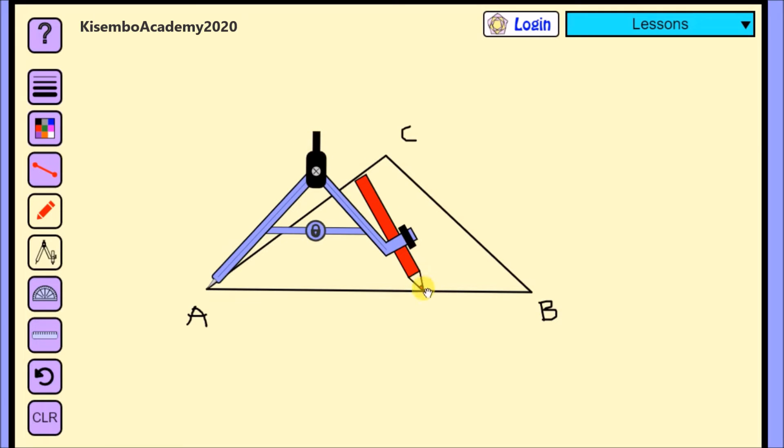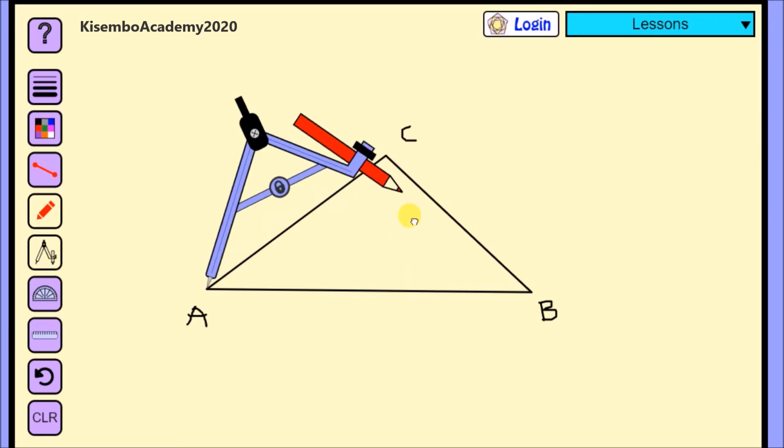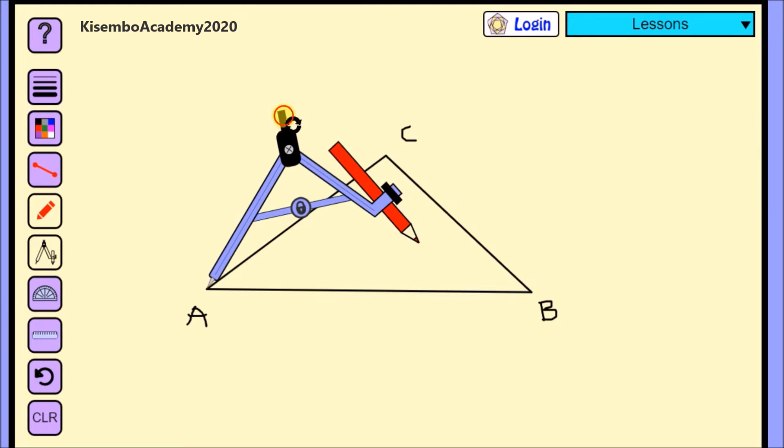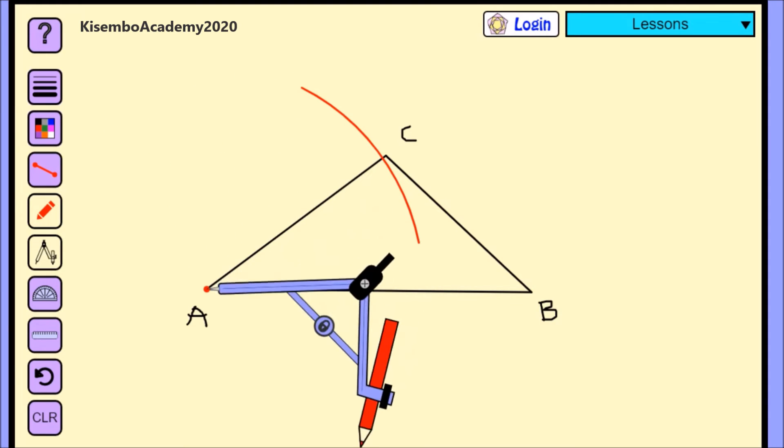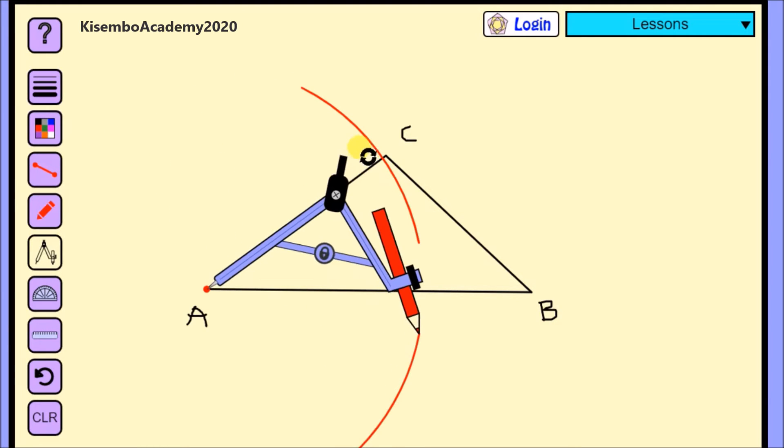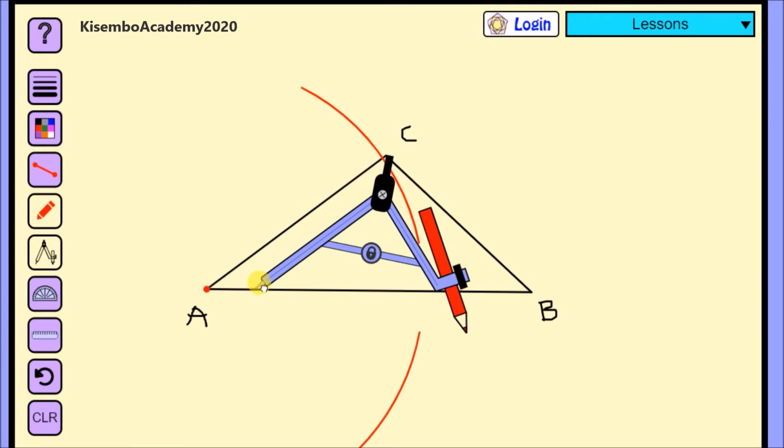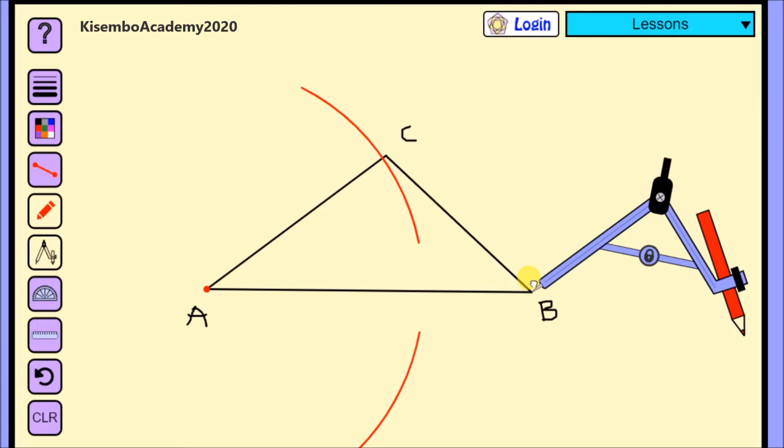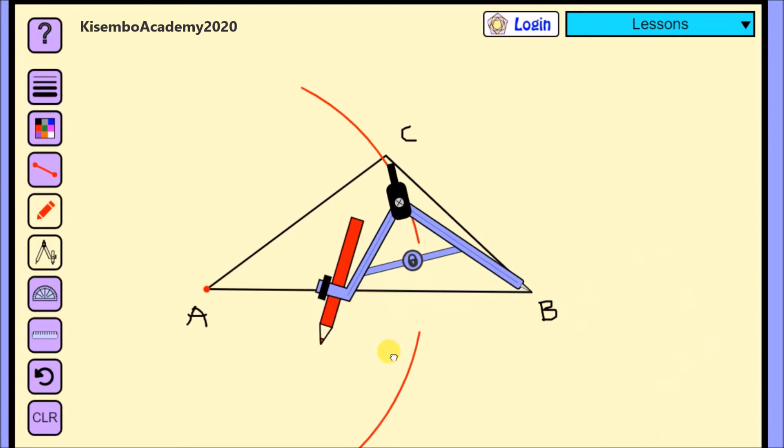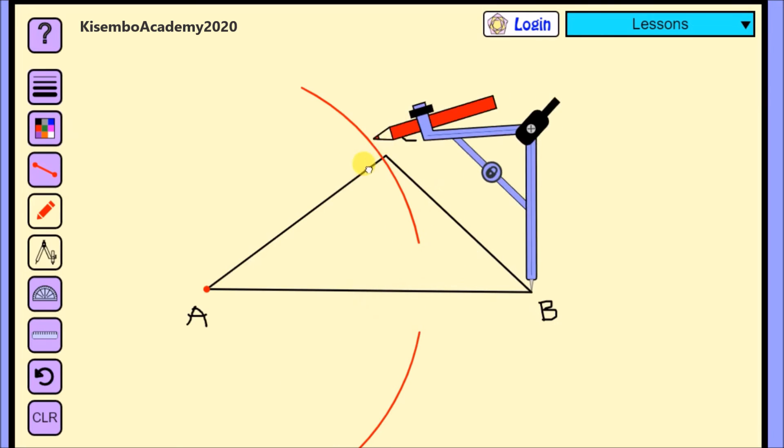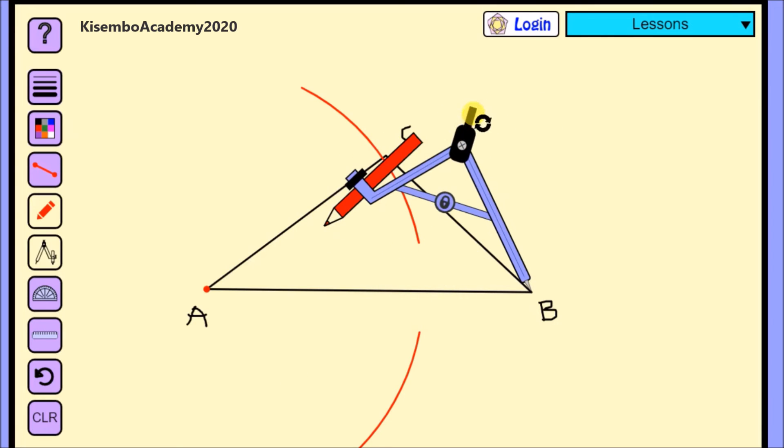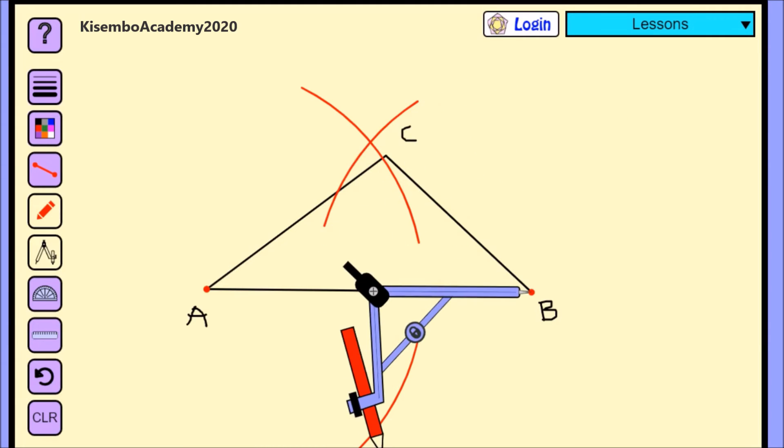And then I will draw two arcs on both sides of that line, as you're seeing. Without changing the length of the stretch of my compass, I will move my compass needle, and put it at point B. And then I'll do the same, draw arcs on either side, and then I will draw my line.